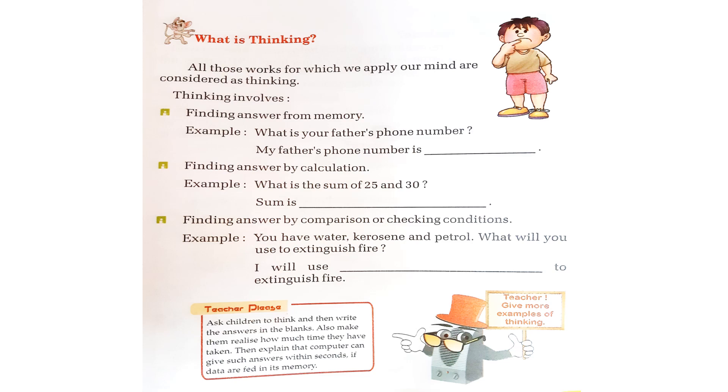I will use. We will use water or kerosene and petrol? If we use kerosene and petrol, the fire will burn more. So, we will use only water. This we are thinking and performing. This is known as thinking. Can I give you examples also for which you think and perform? Try it by yourself and write it in your craft note.